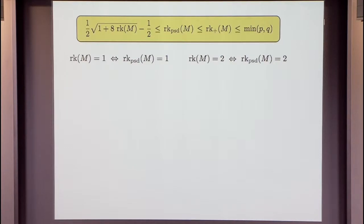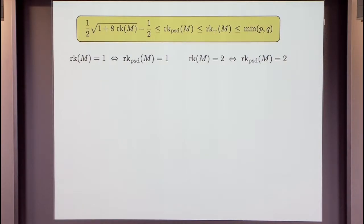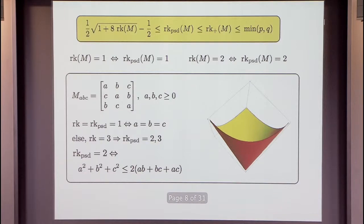Small cases are easy to determine. If the rank of a matrix is 1, then PSD rank is 1 and vice versa. If the rank is 2, PSD rank is exactly 2 as well — rank and PSD rank agree for values 1 and 2. The first place where we see a difference is rank 3, like we saw in the first slide. Let's do another example showing what happens to PSD rank for rank 3 matrices.